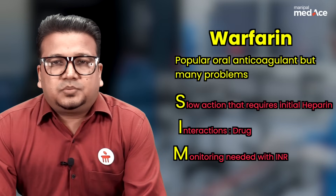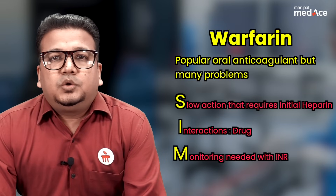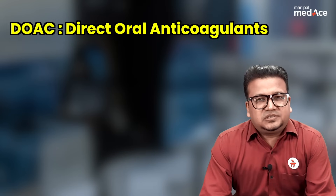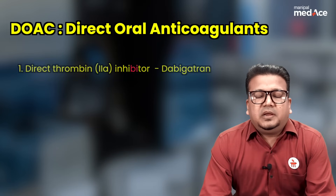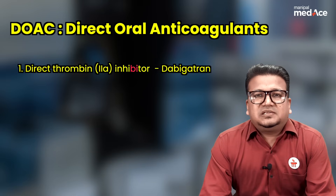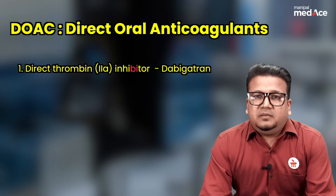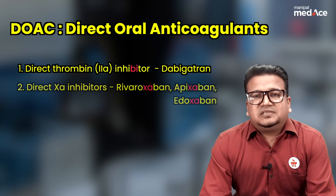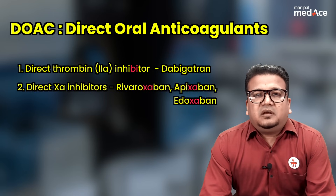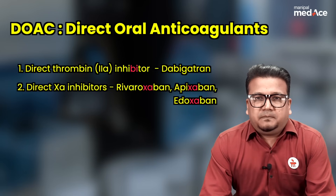To overcome these problems, we have developed two new classes of oral anticoagulants. First is dabigatran, which is a direct thrombin or factor 2a inhibitor. Dabigatran has 'bi' in the spelling — bi means 2, so it is a factor 2a inhibitor. Second are apixaban, edoxaban, and rivaroxaban, which are direct factor 10a inhibitors.